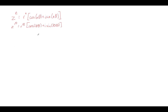This is called De Moivre's theorem — I believe it was Abraham De Moivre — a mathematician who did a lot of work in probability and used this to look at complex numbers.